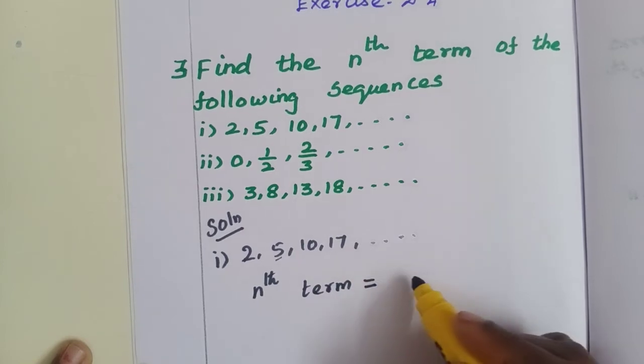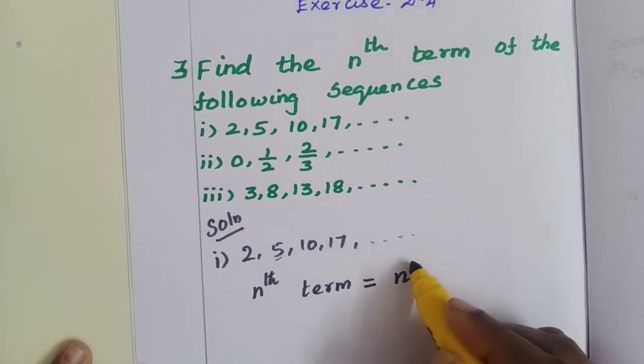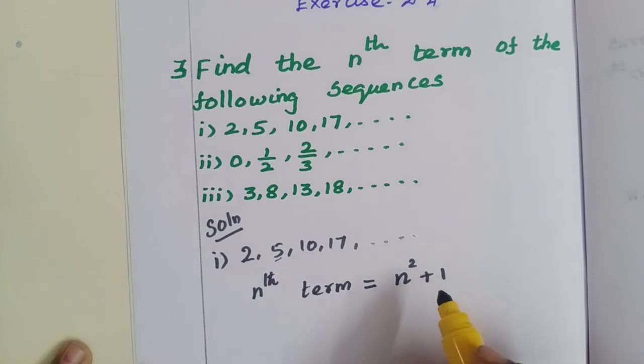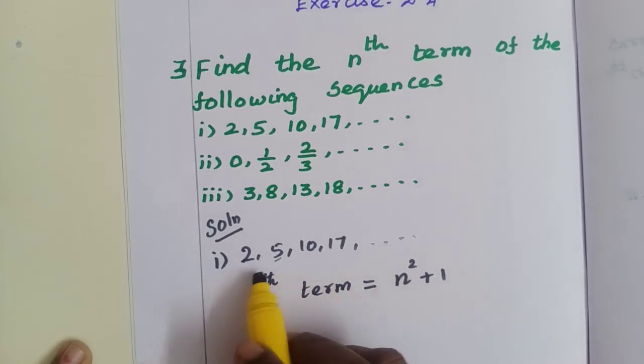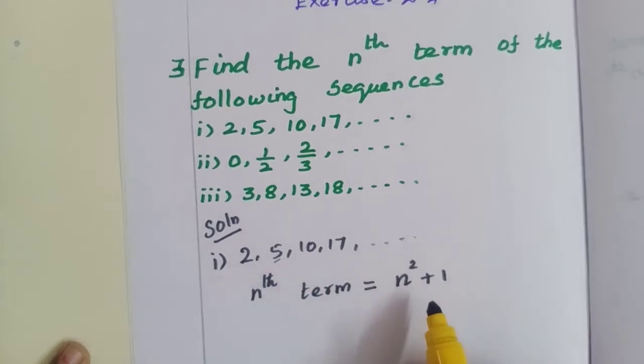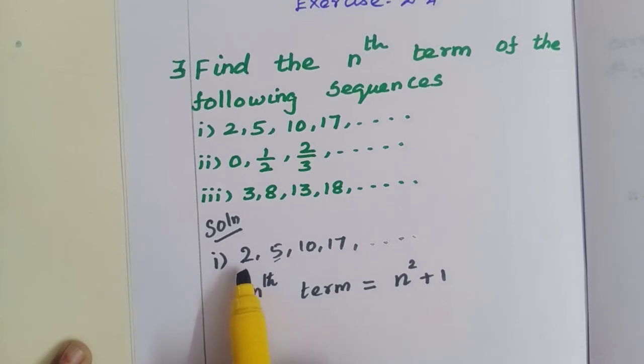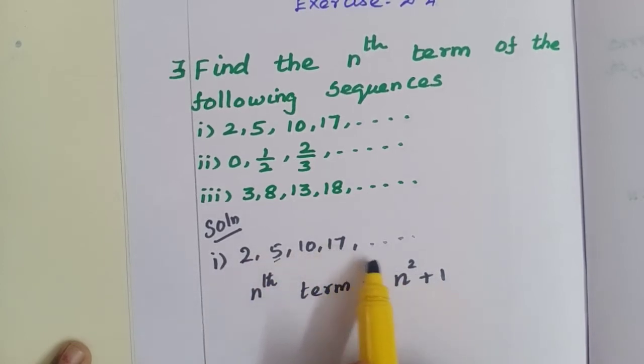nth term is equal to n squared plus 1. So if n value is 1, 1 squared plus 1 is 2. N value 2, second place, 2 squared plus 1. 3 squared plus 1, 4 squared plus 1. Next term 5 squared plus 1, you can find out.